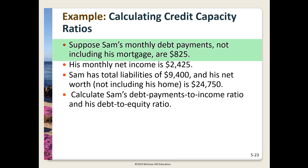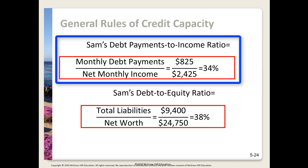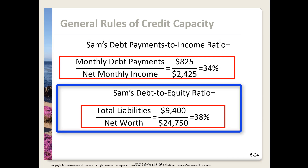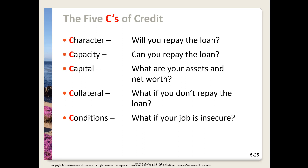Let's walk through an example. Sam's monthly debt payments are $825, not including his mortgage. His monthly net income is $2,425. Total liabilities: $9,400. Net worth: $24,750, excluding his home. Sam's debt-payments-to-income ratio: $825 divided by $2,425 equals 34% — this is way above the 20% maximum, so he needs to get his credit in order. Sam's debt-to-equity ratio: $9,400 divided by $24,750 equals 38%, which is less than one, so in this case Sam's in good shape.